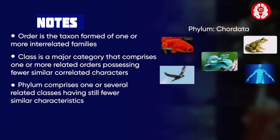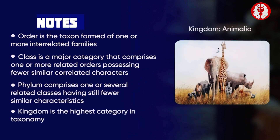Phylum comprises one or several related classes having still fewer similar characteristics. Kingdom is the highest category in taxonomy.